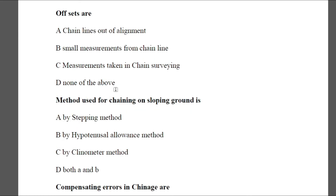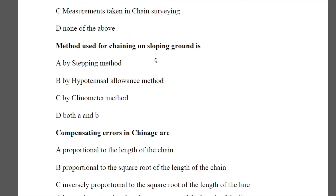Question 13: Offsets are — Option A: chain lines out of alignment, Option B: small measurements from the chain line, Option C: measurements taken into the chain surveying, Option D: none of the above. The answer is B — small measurements from the chain line.